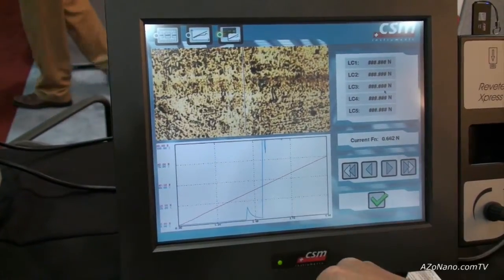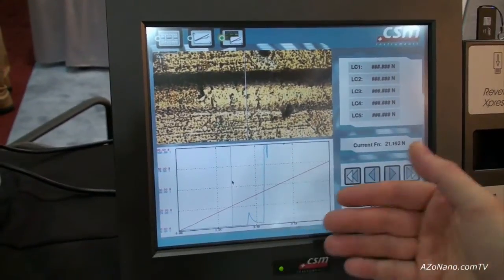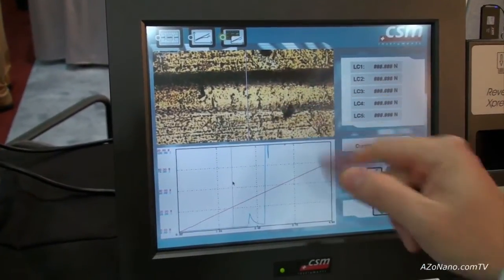Now if I click anywhere along here it will go to that position along the scratch. So we're correlating the length of the scratch with where we are.